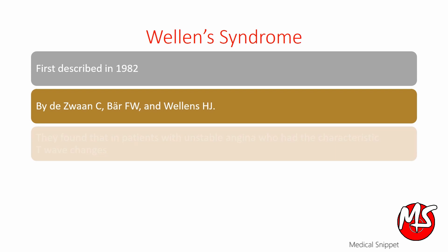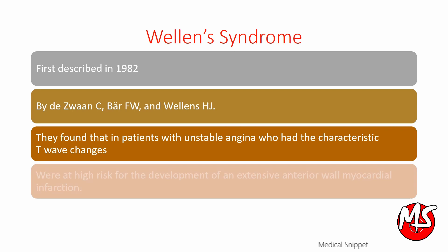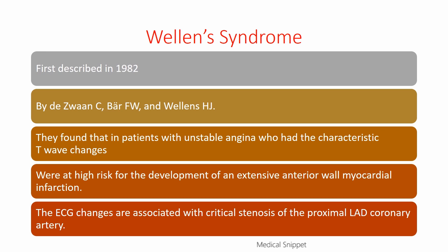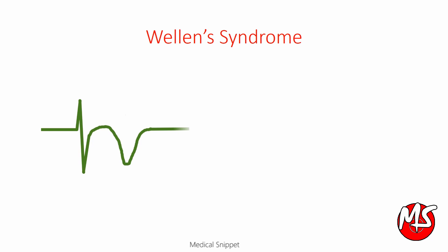They found that in patients with unstable angina who had the characteristic T wave changes were at high risk for the development of an extensive anterior wall myocardial infarction. The ECG changes were associated with critical stenosis of the proximal left anterior descending coronary artery.